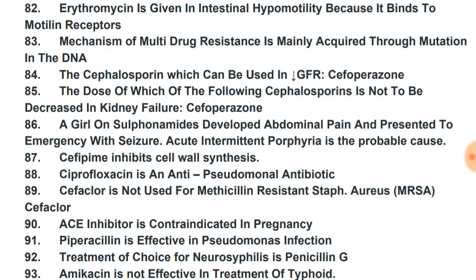Erythromycin is given in intestinal hypomotility because it binds to motilin receptors and increases motility. Mechanism of multi-drug resistance is mainly acquired through mutation in DNA. The cephalosporin which can be used in decreased GFR (renal failure) is cefoperazone — its dose does not need to be decreased in kidney failure.